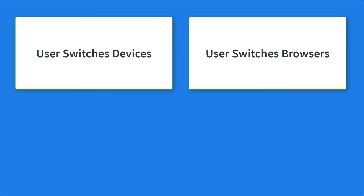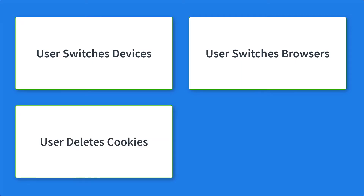The next is if a user switches browsers. Similar to switching devices, switching browsers will also cause Google Analytics tracking to assign a new user for each browser, even if it is the same person.